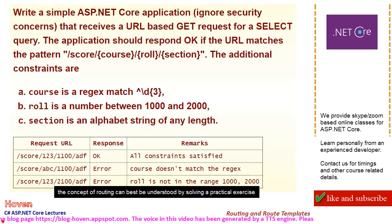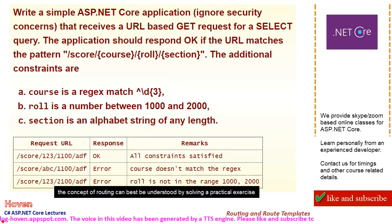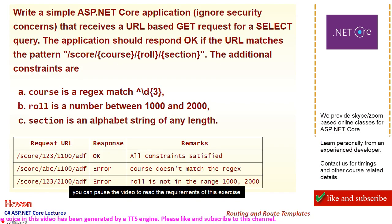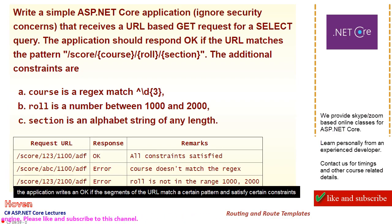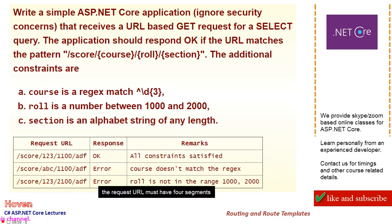The concept of routing can best be understood by solving a practical exercise. You can pause the video to read the requirements of this exercise. We have to write an ASP.NET Core application to respond to GET requests. The application writes an OK if the segments of the URL match a certain pattern and satisfy certain constraints. The request URL must have four segments. The first segment, Score, is a literal. The other three are tokens called Course, Role, and Section.